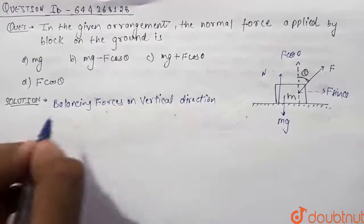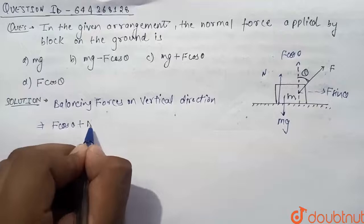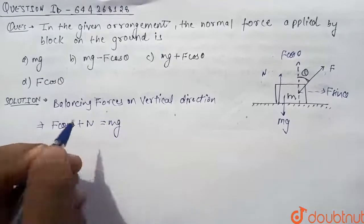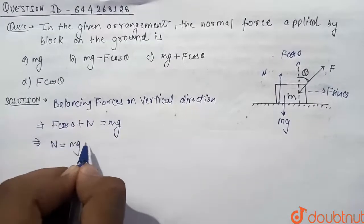We can say that F cos theta plus N equals mg, or we can say that N is equal to mg minus F cos theta.